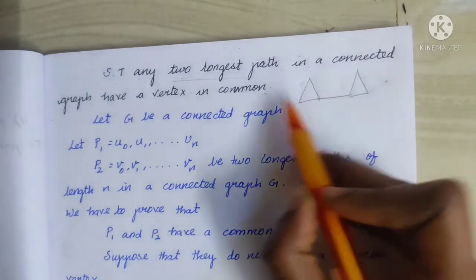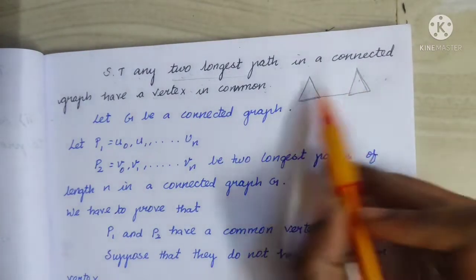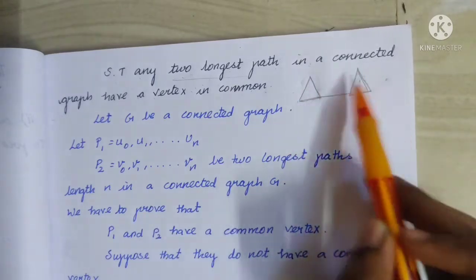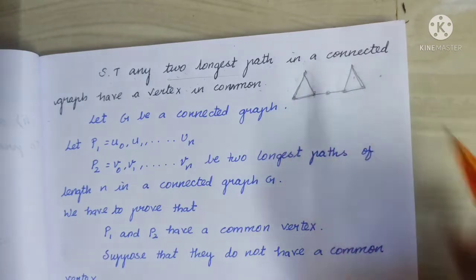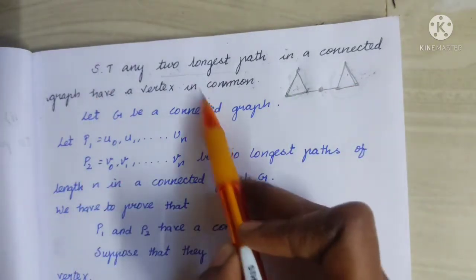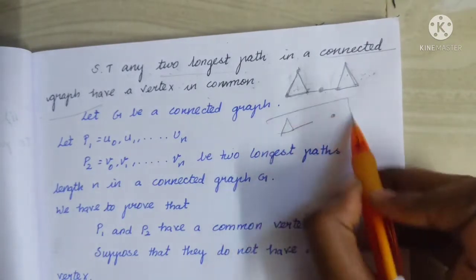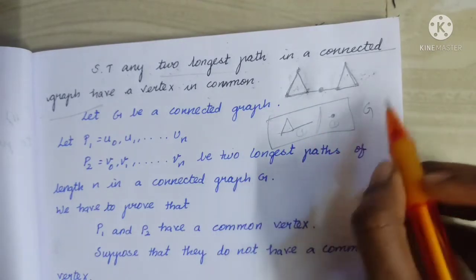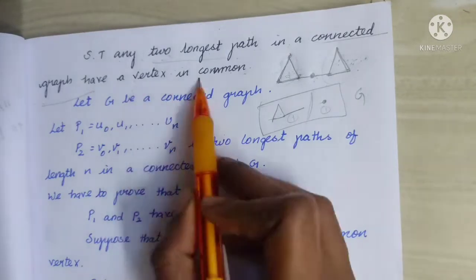So let's put a graph. In this graph, we have two longest paths. This is one path, and this is another path. So here are two longest paths. Two longest paths are connected. This graph is connected and has a vertex in common. These two paths share a vertex. So the vertex is connected by an edge. Now, this is not a disconnected graph — it is one component. This is called a connected graph. Two longest paths in a connected graph have a vertex in common. These are two paths.